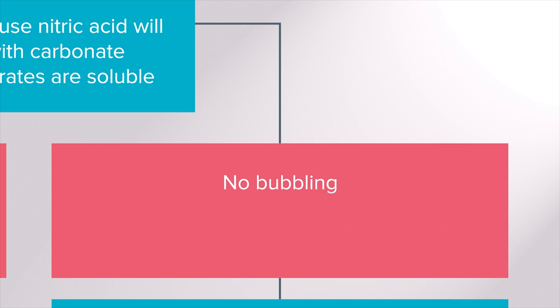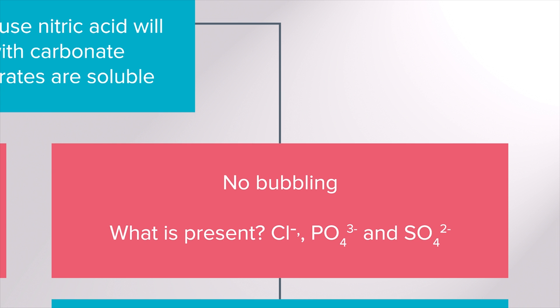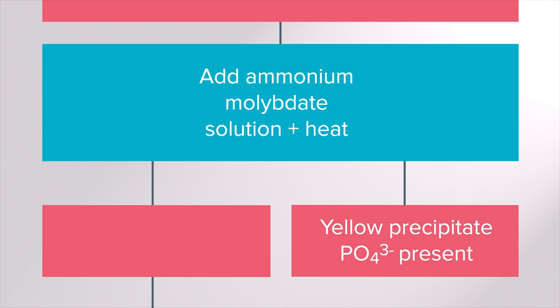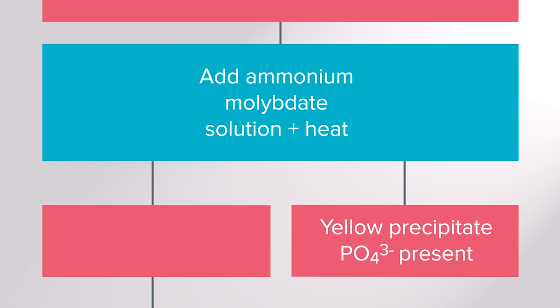If on the other hand there is no bubbling when nitric acid is added, chloride, phosphate or sulfate may be present. Some ammonium molybdate solution may now be added to the sample and gently heated. If a yellow precipitate, ammonium phosphomolybdate forms then we know phosphate ions are present.